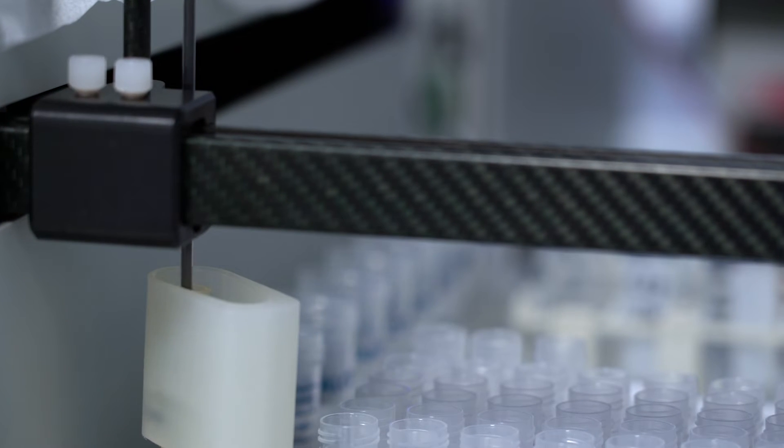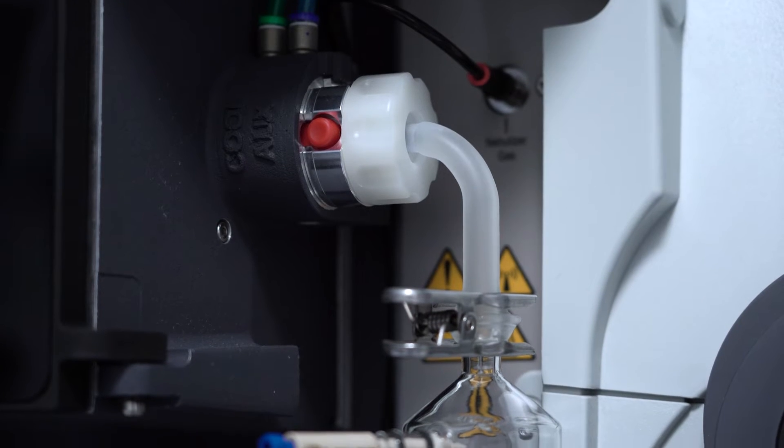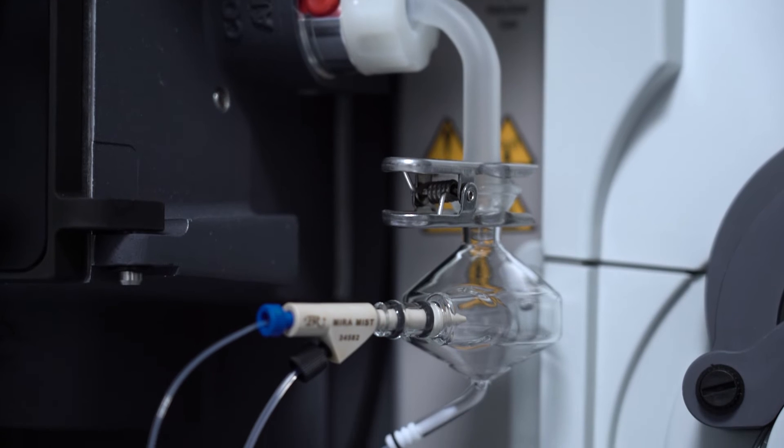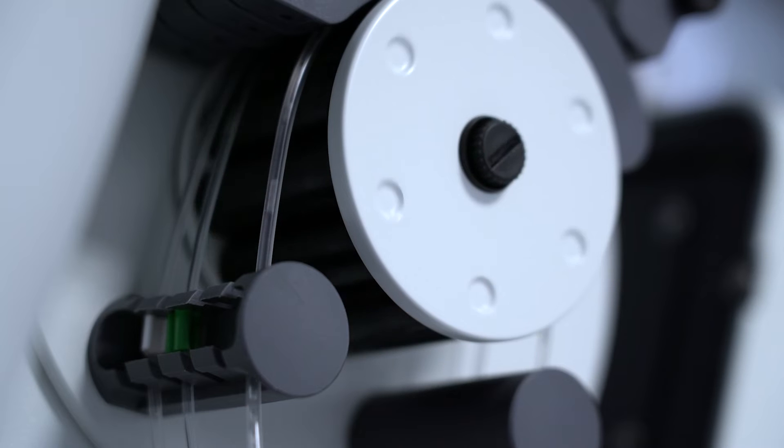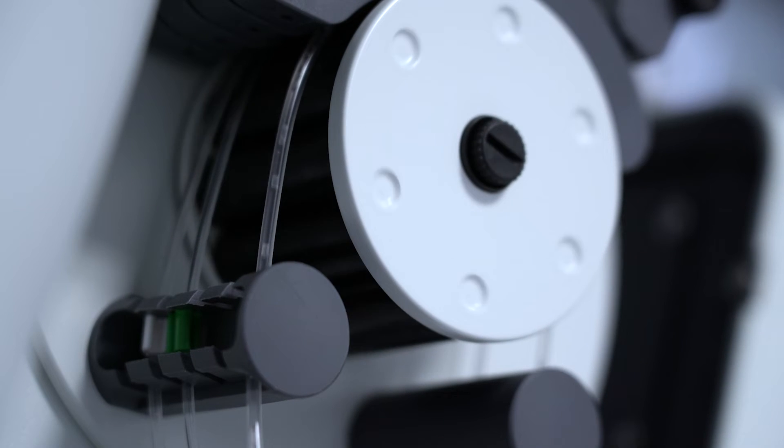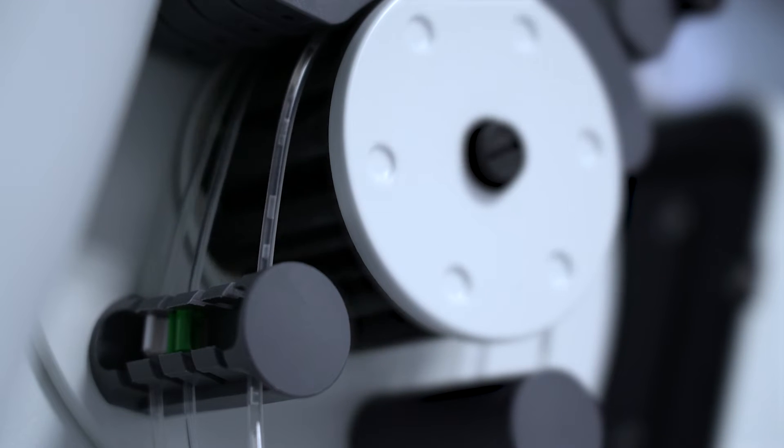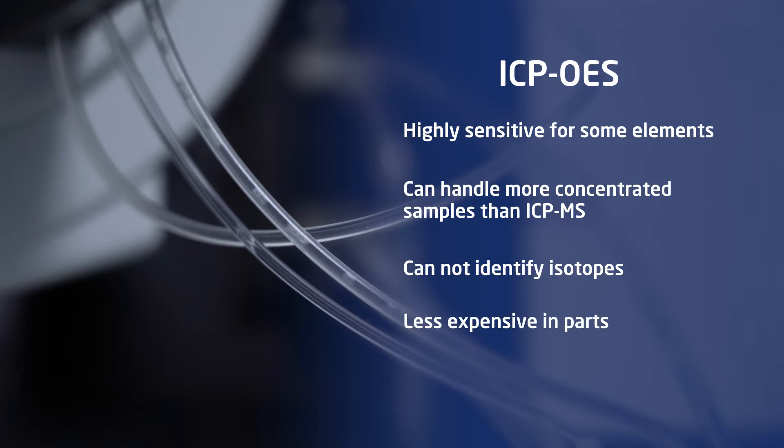The ICP-OES also needs a plasma and a nebulizer, but it measures light emissions instead of ions. It therefore has similar requirements regarding gas and the nebulizer, but needs no high vacuum parts and does not need to discriminate by mass, saving some expensive parts.